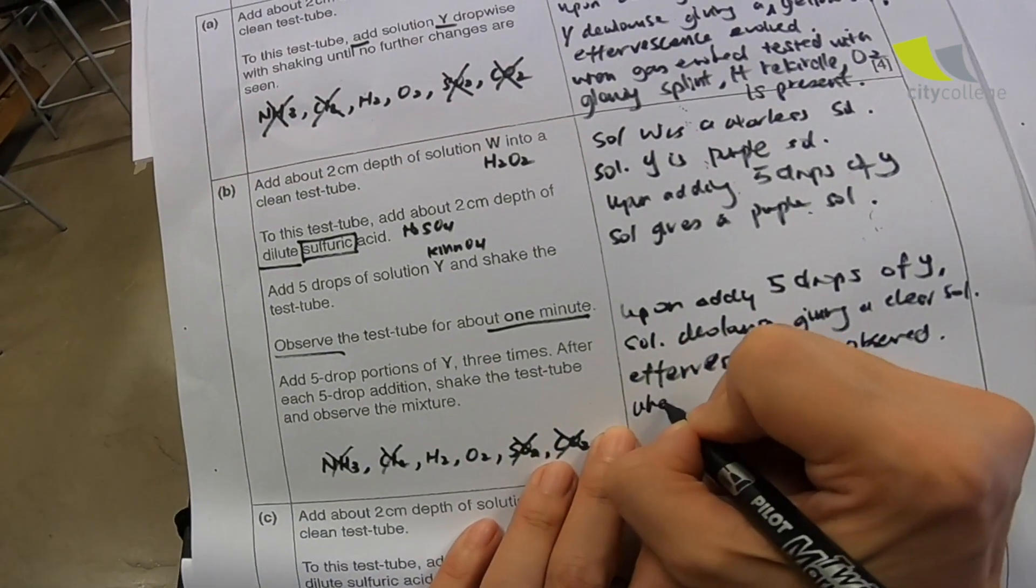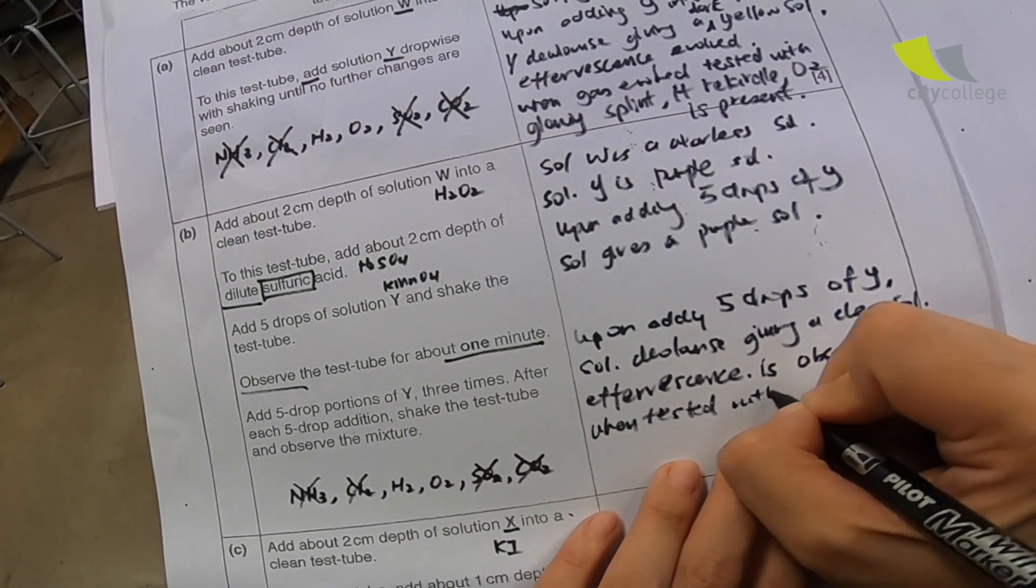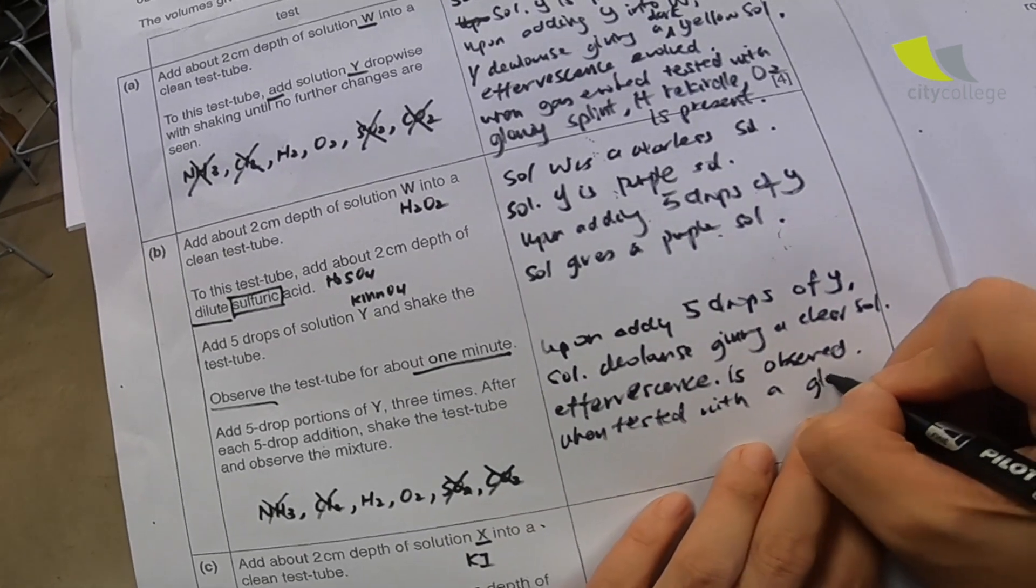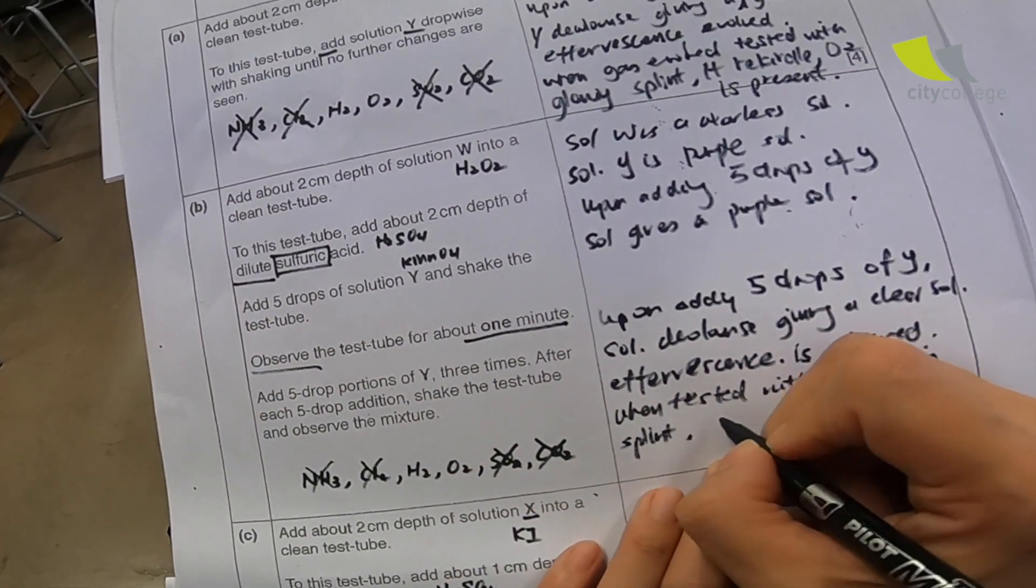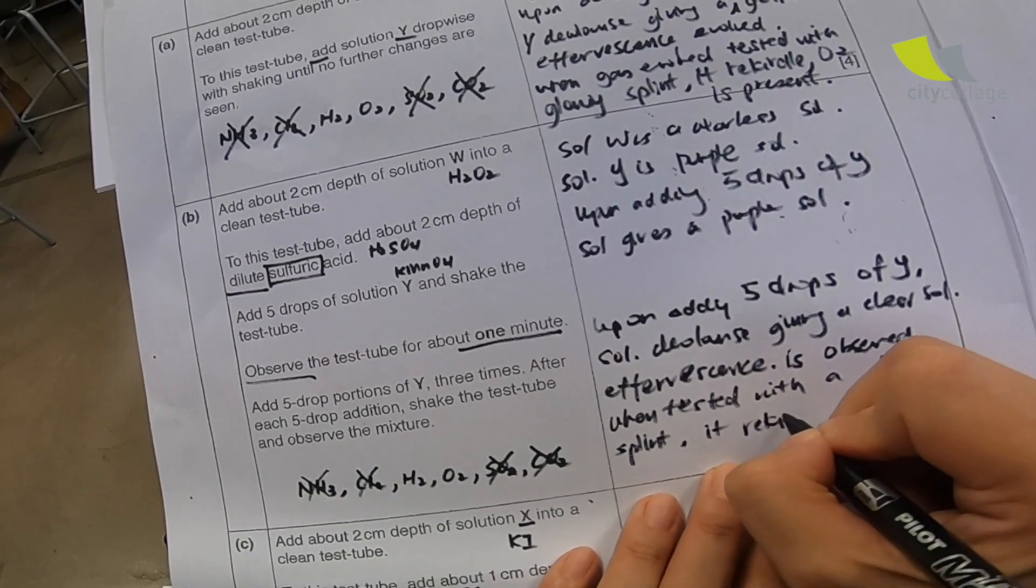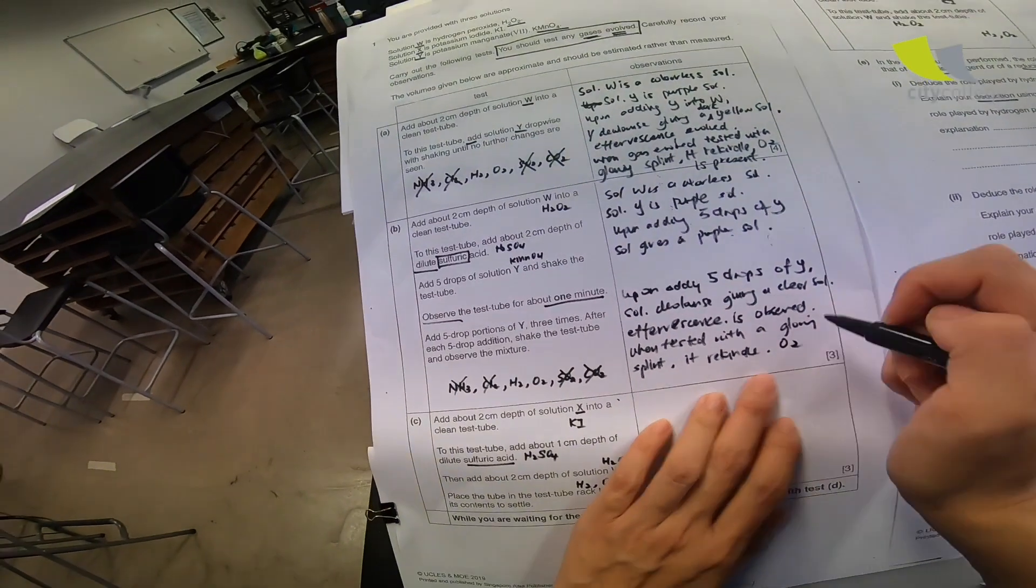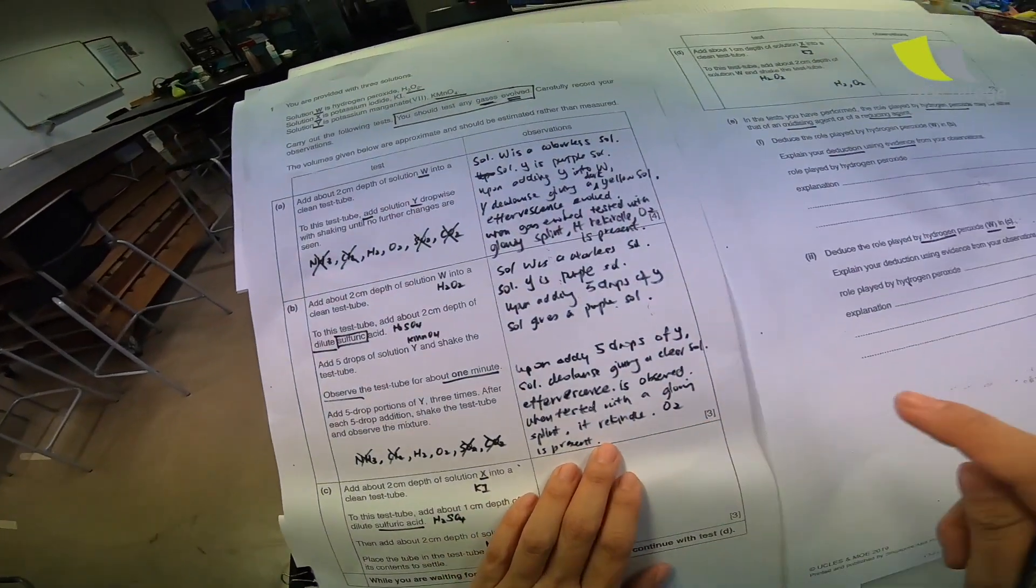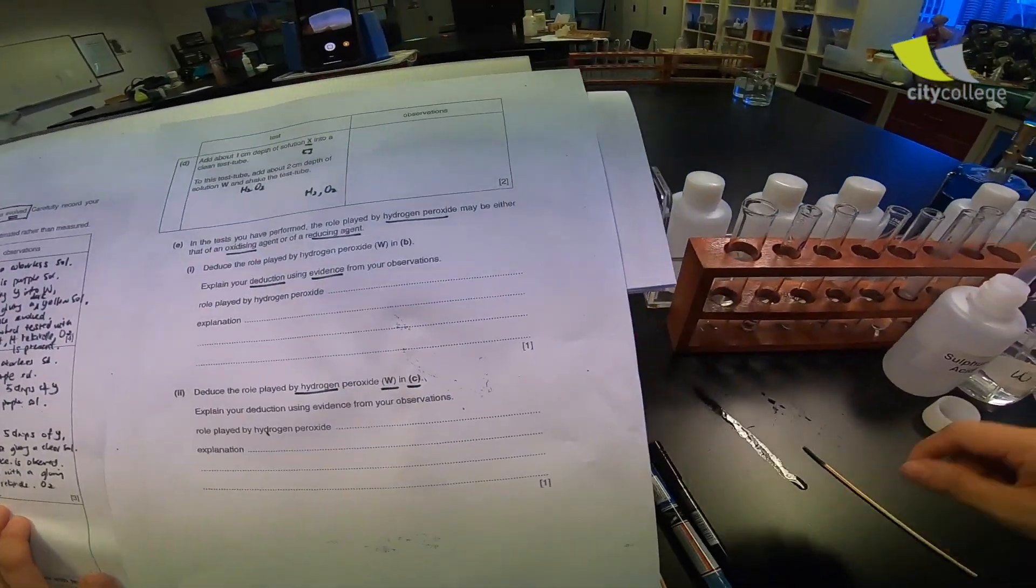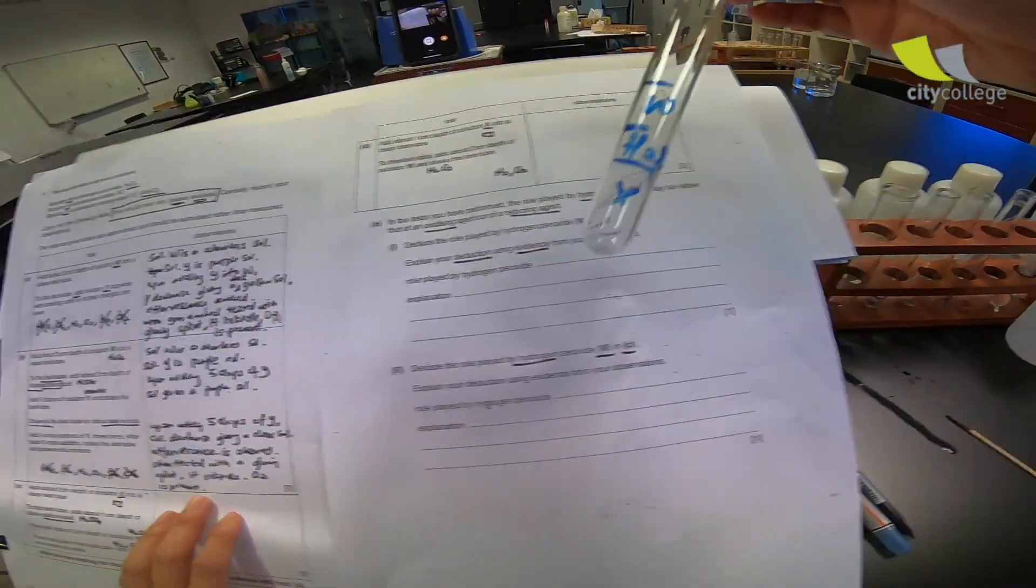When tested with a glowing splint. Some of you will be wondering. It rekindled. Now, some of you will be wondering, O2 is present. Some of you might be saying that, but just now we didn't see a result. Well, I will explain later at the end of the experiment. Let's move on to part C first.